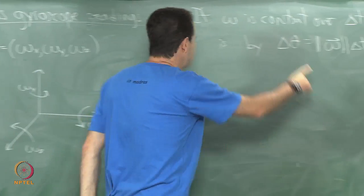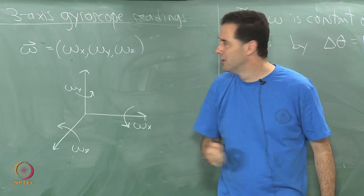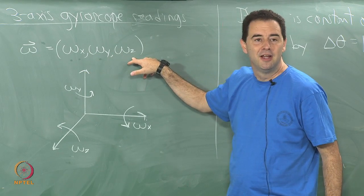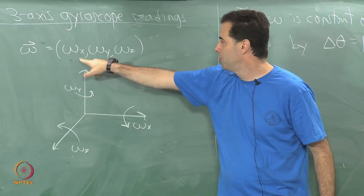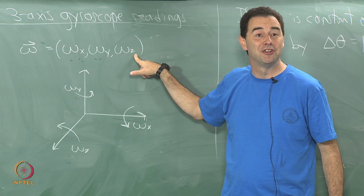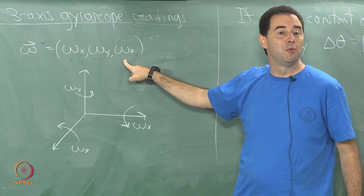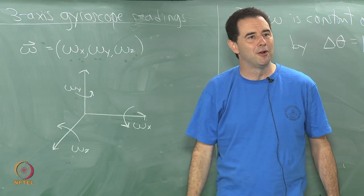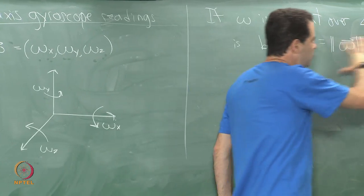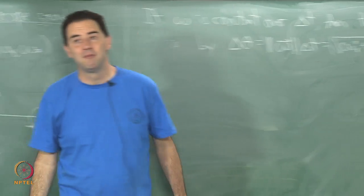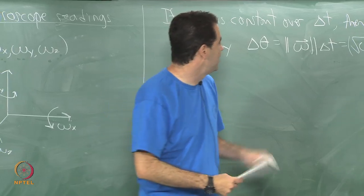That suggests that taking the length of this vector gives the overall rate of rotation. This makes good sense: each component is in radians per second, so the vector magnitude is the total radians per second. If the object stops rotating, all three components become 0. If it's rotating only in the x-y plane, the omega-z component carries all the rotation and taking the length gives exactly that part. This is the overall rate of rotation, and the length times delta-t gives the instantaneous rotation amount.